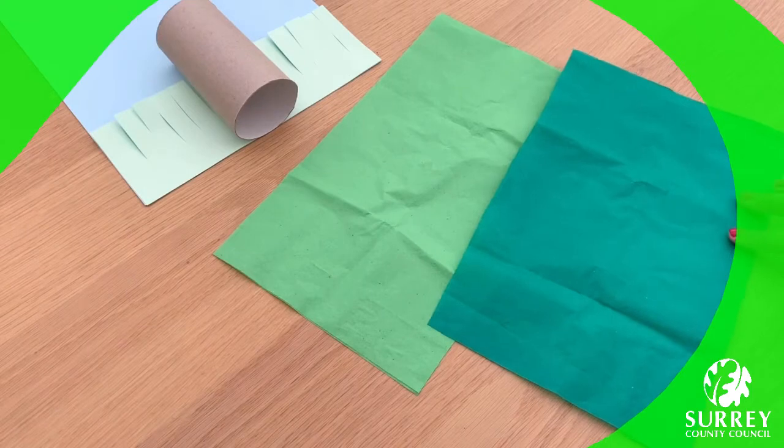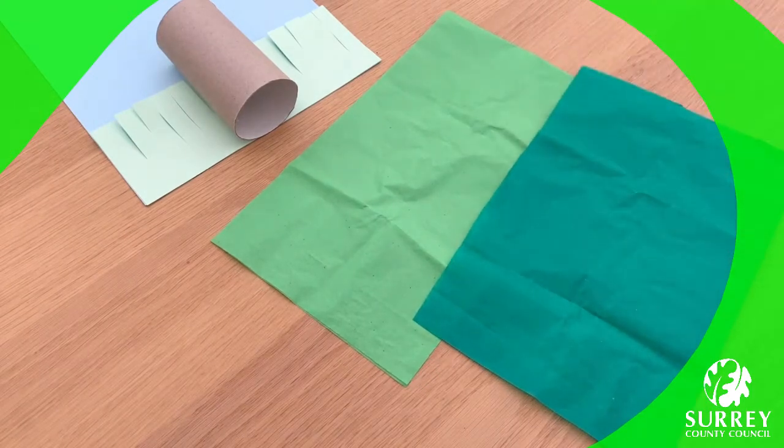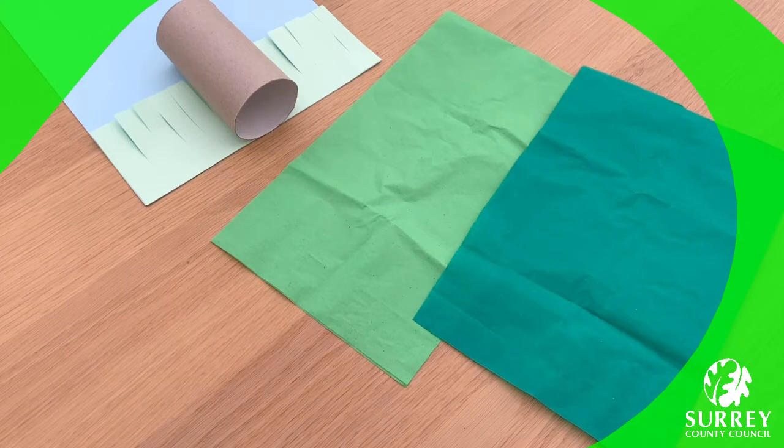Okay, so now get your green tissue paper and use your pair of scissors and cut up lots of small squares. This step will really help us to make the lovely apple tree's leaves!